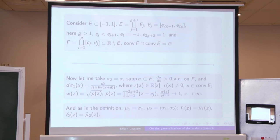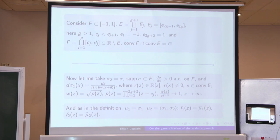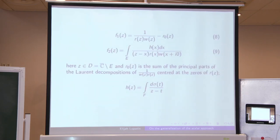The definition is quite the same: the measure sigma 2 is unchanged, while the measure sigma 1 is defined in a new way. As in the general definition, we consider the Cauchy-Stieltjes transforms of these measures and obtain the explicit form of functions for which we are going to estimate the Hermite-Padé asymptotics.